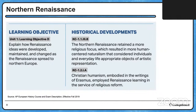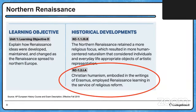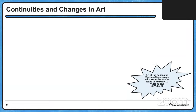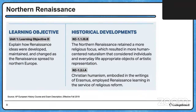The Italian Renaissance moves to the North. I want us to look at Christian humanism, which was embodied in the writings of Erasmus and employed Renaissance learning in the service of religious reform. The Northern Renaissance retains a more religious focus, and results in a more human-centered naturalism that considers individuals and everyday life as appropriate objects of artistic representation.